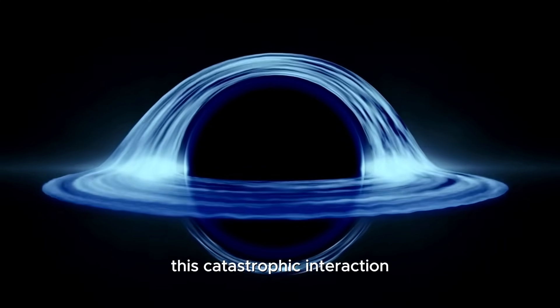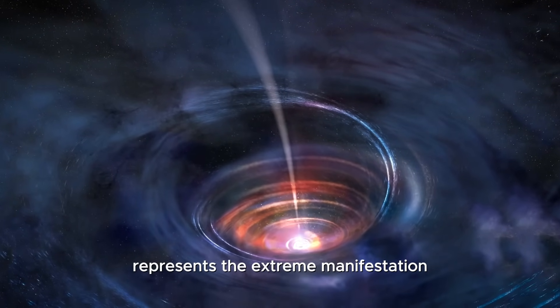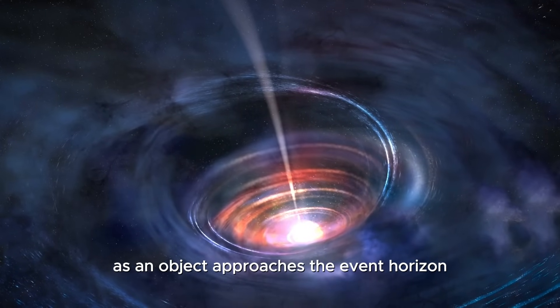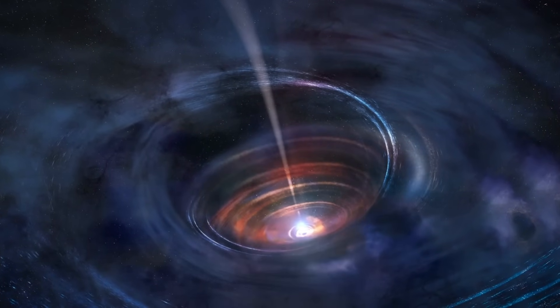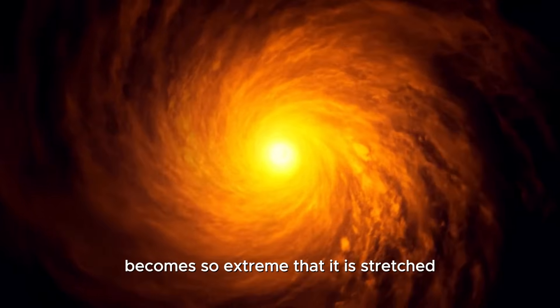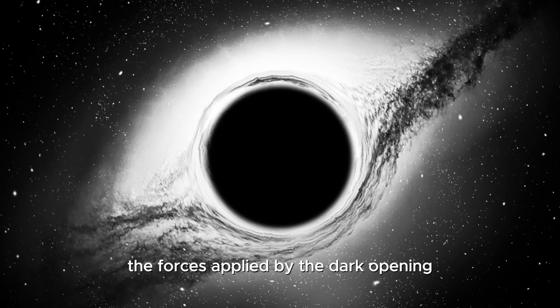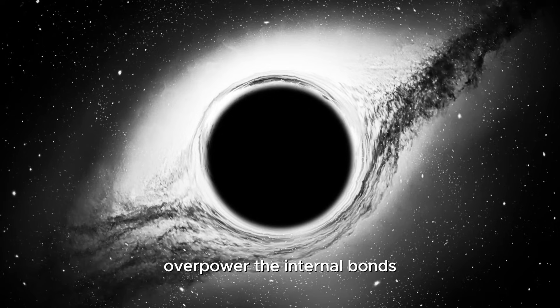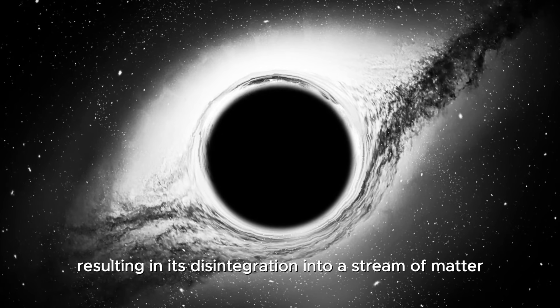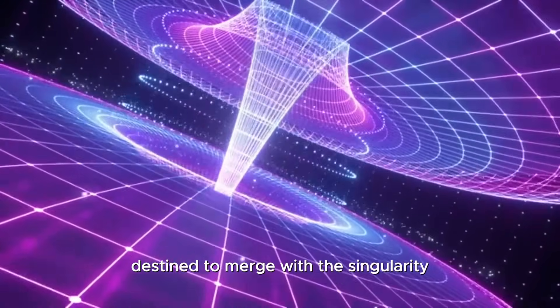This catastrophic interaction, known as spaghettification, represents the extreme manifestation of a dark opening's gravitational strength. As an object approaches the event horizon, the gravitational gradient across its length becomes so extreme that it is stretched and contorted into a filamentary structure resembling strands of spaghetti. The forces applied by the dark opening overpower the internal bonds keeping the object intact, resulting in its disintegration into a stream of matter destined to merge with the singularity.